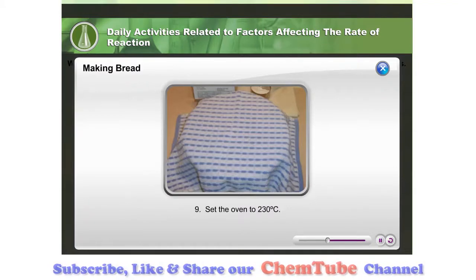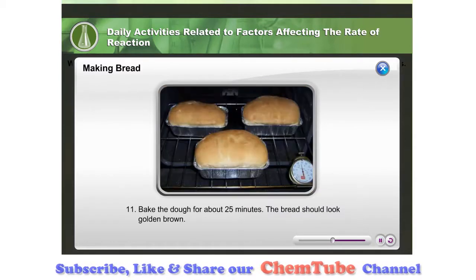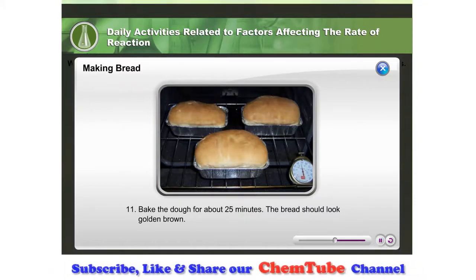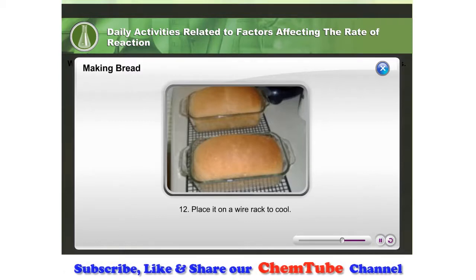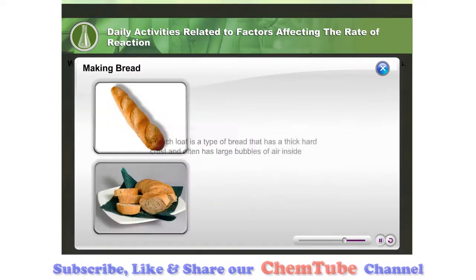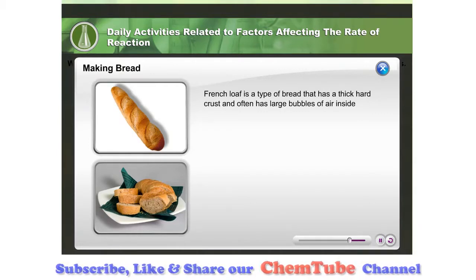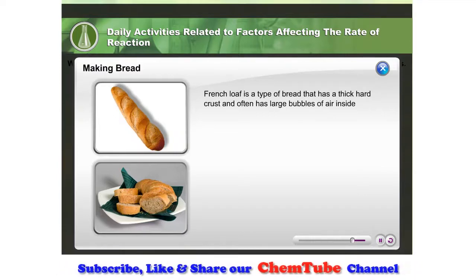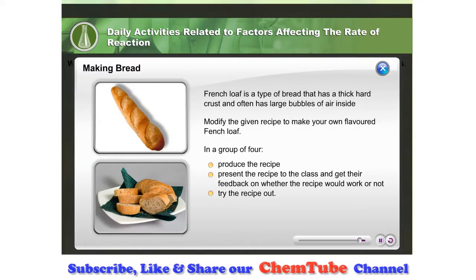Set the oven to 230 degrees centigrade. When the size of the dough has doubled, which normally takes about 30 minutes, place it on a greased baking tray. Bake the dough for about 25 minutes until it looks golden brown. Place it on a wire rack to cool. The bread has a spongy and soft texture with a thin crust. Have you heard of French loaf? French loaf is a type of bread with a thick, hard crust and often large bubbles of air inside. Modify the given recipe to make your own flavoured French loaf, present it to the class, and then try the recipe out.